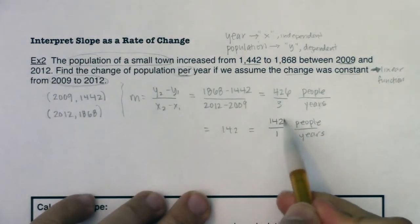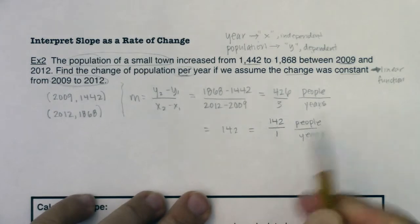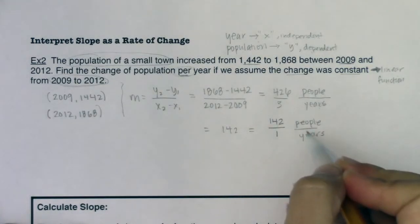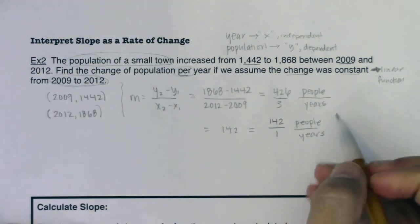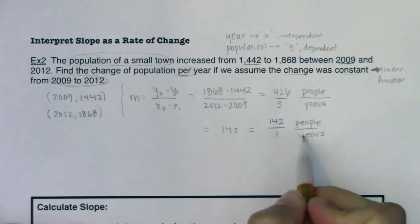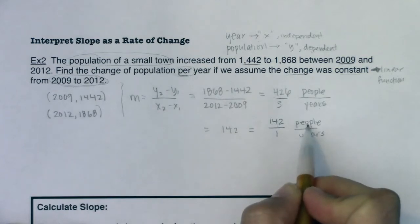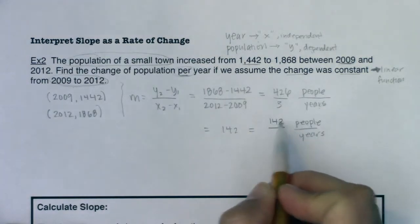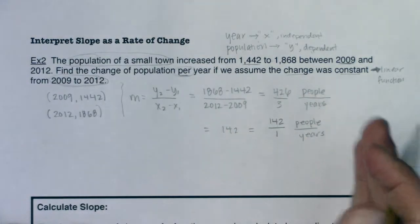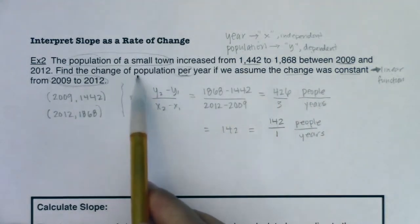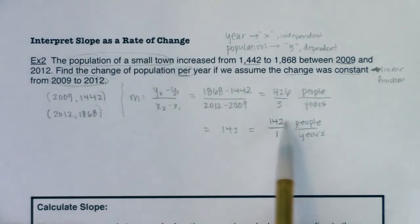The benefit of the unit ratio is you really can start to see what the slope means. This is telling you for every year, the population of that town increases by about 142 people. It might not be exactly 142 every year, but on average it's 142. So you can see the change in population per year - each year, every one year, we gained 142 people.